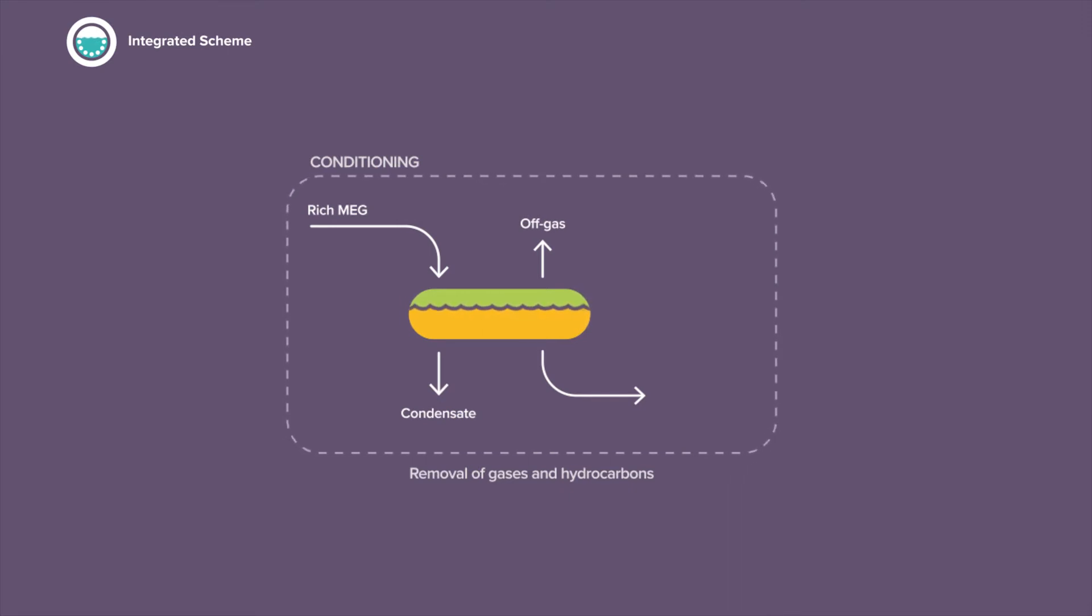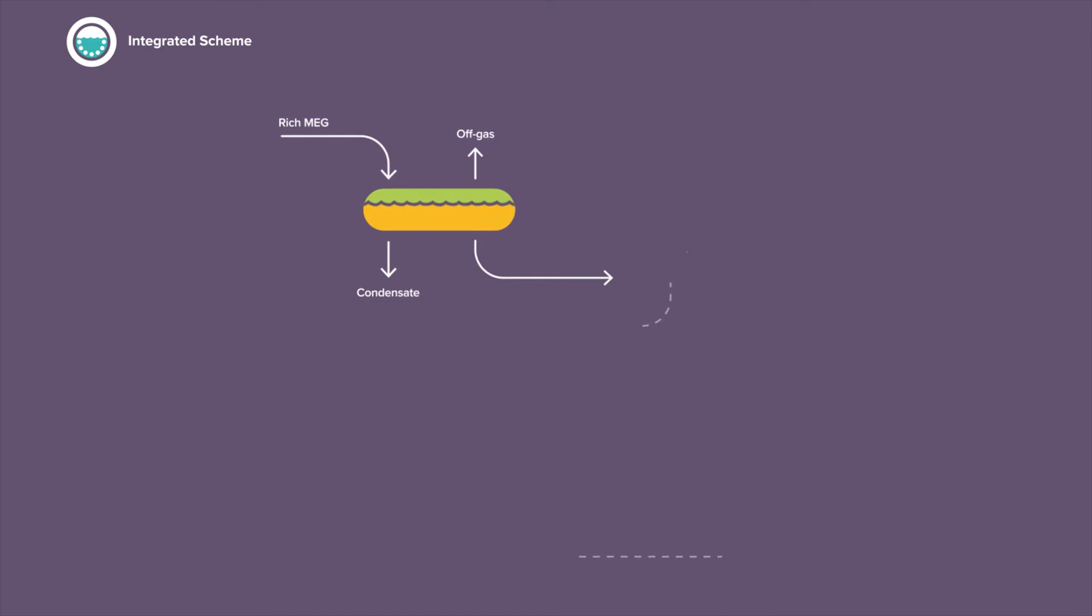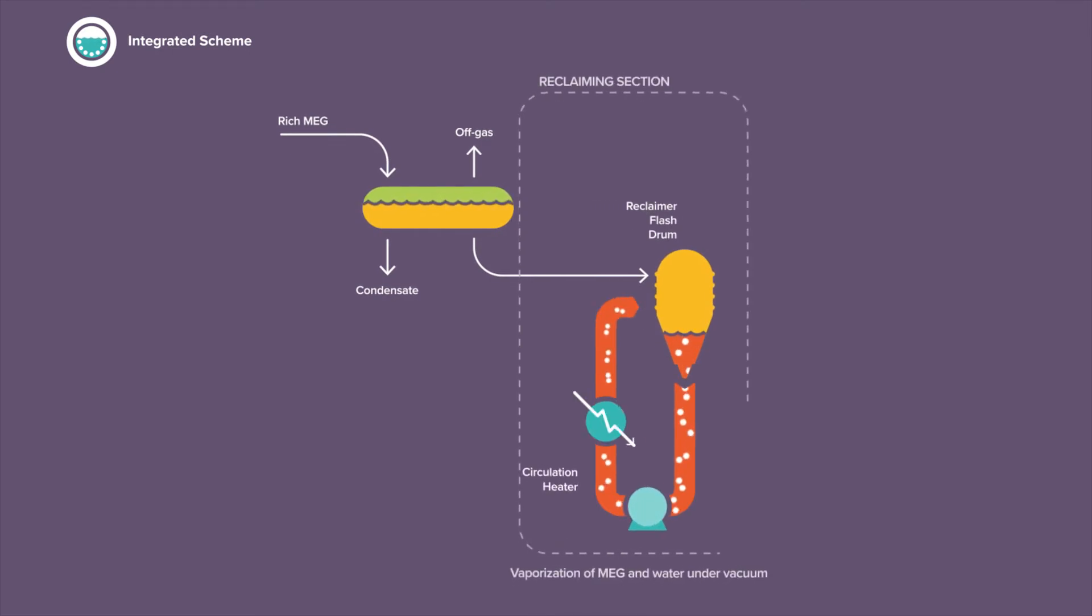The rich MEG generally contains water and salts, as well as other contaminants. In the second section, called reclaiming section, MEG and water are vaporized under vacuum in the reclaimer flash drum, thanks to heat input provided in a circulation heater. Salts are not vaporized and remain in the liquid phase, leading to accumulation of salts until saturation and then precipitation.